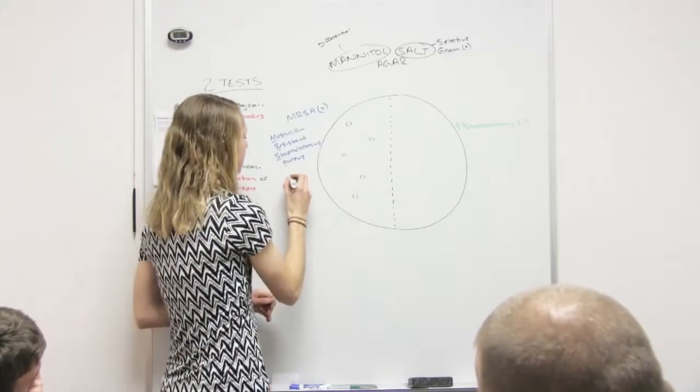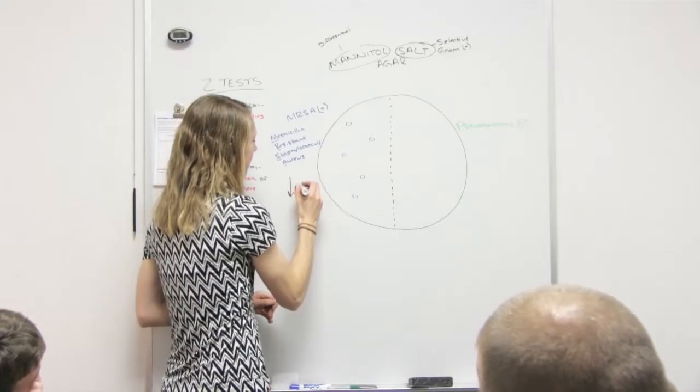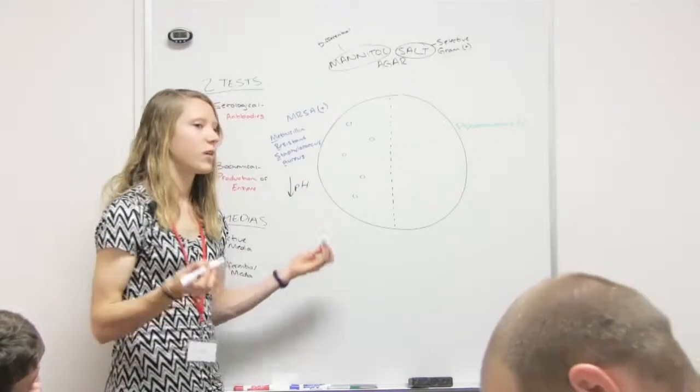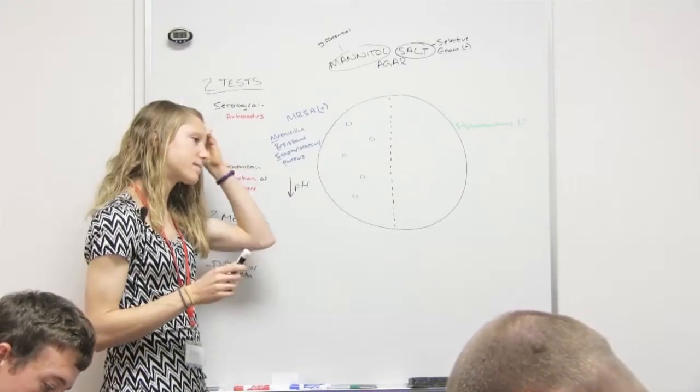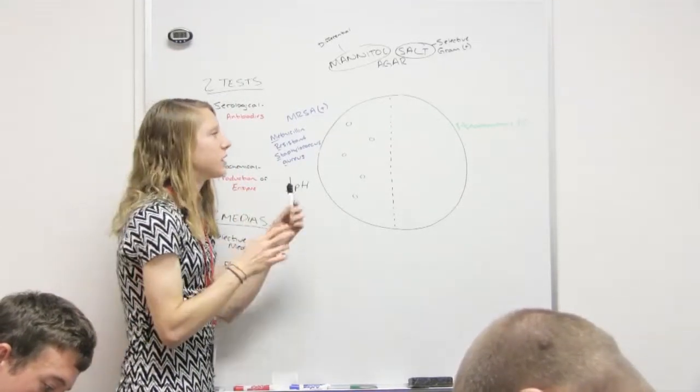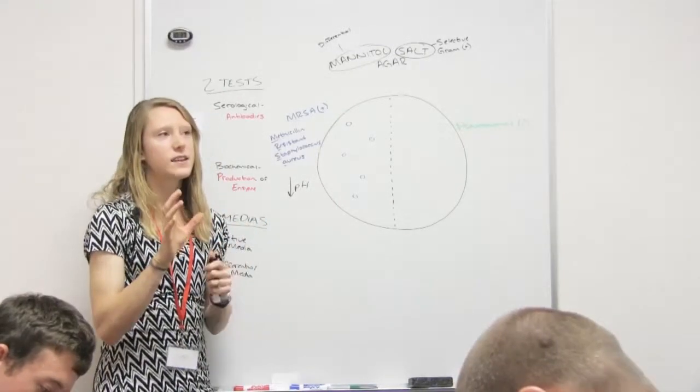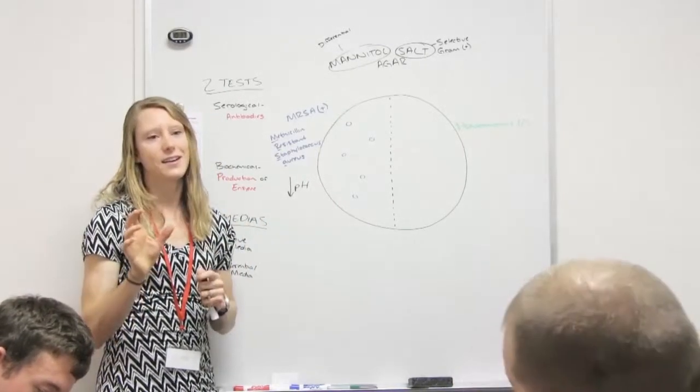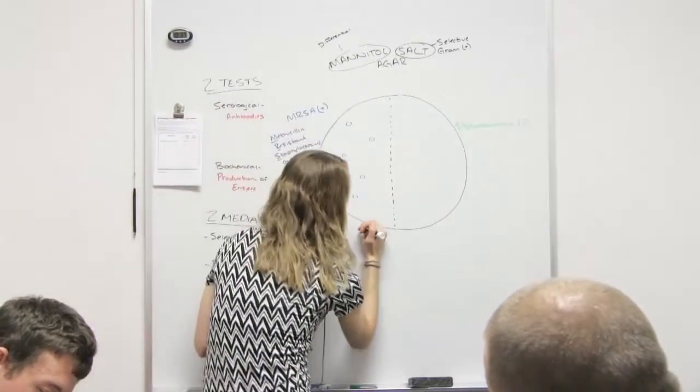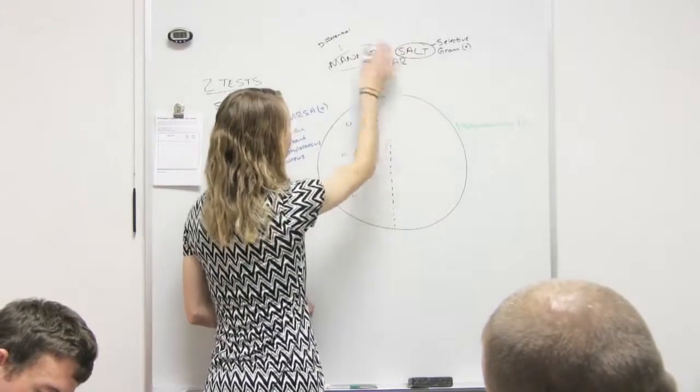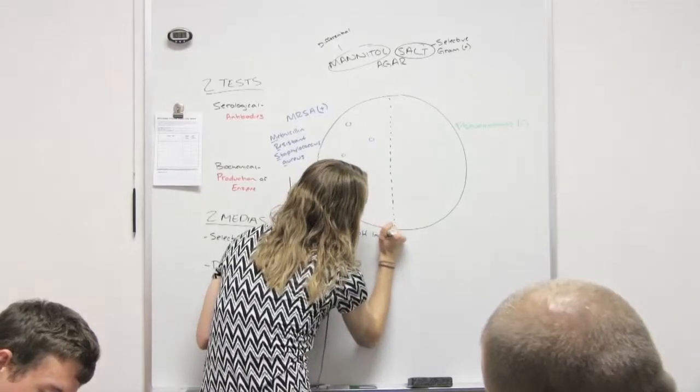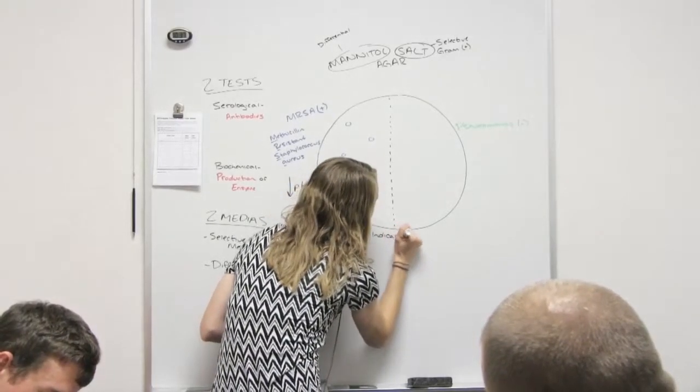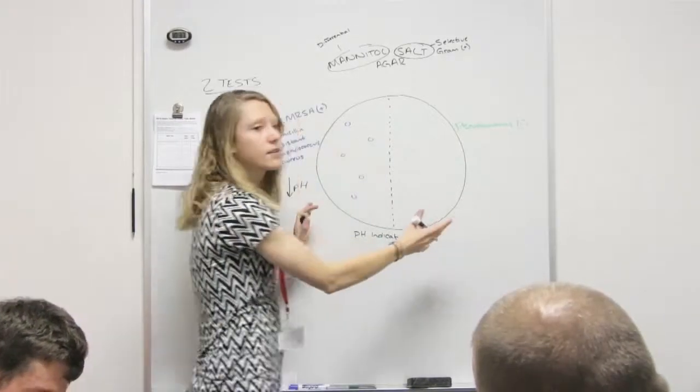Like they ferment the mannitol and what's that byproduct again? Acid. Acid. So what happens to the pH of this side of the plate? Goes down. The pH goes down, becomes more acidic. Why is that important? Because it causes a color change if it's more acidic. Yeah. So there is something in there called a pH indicator.